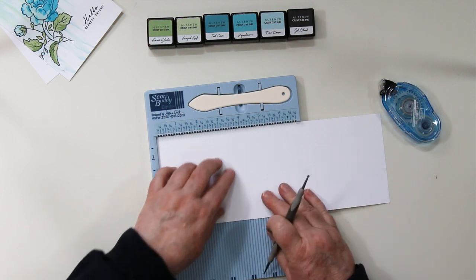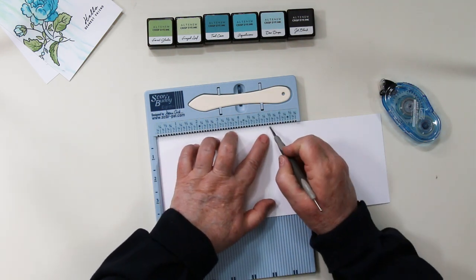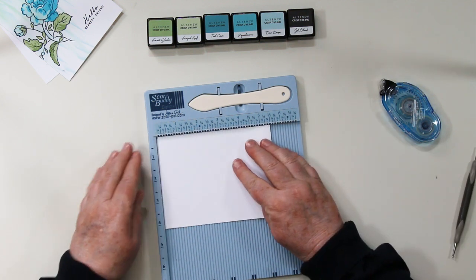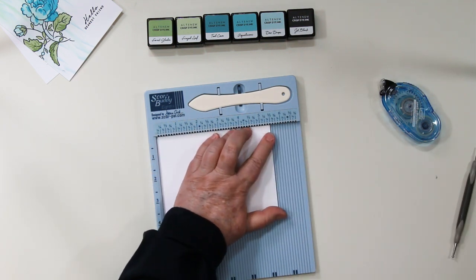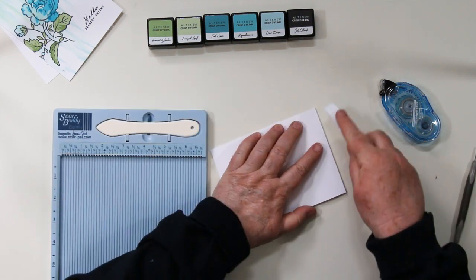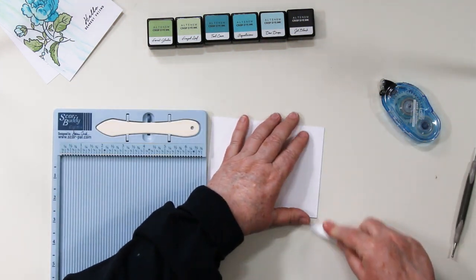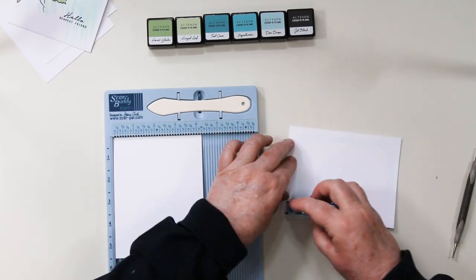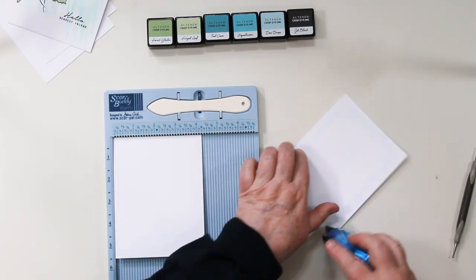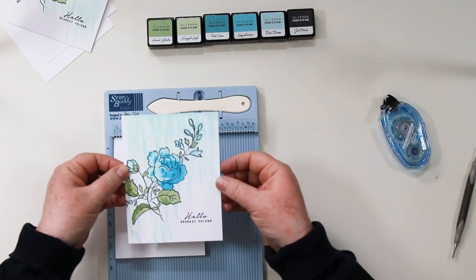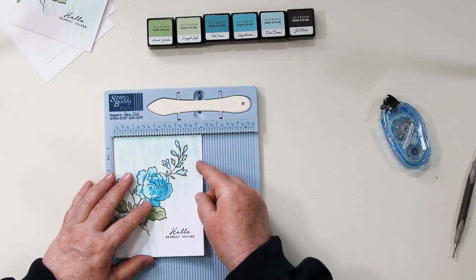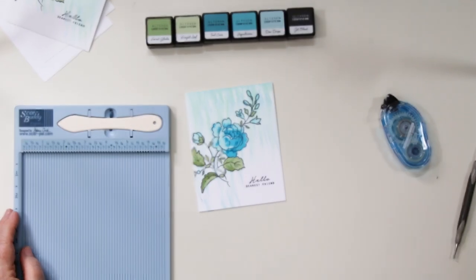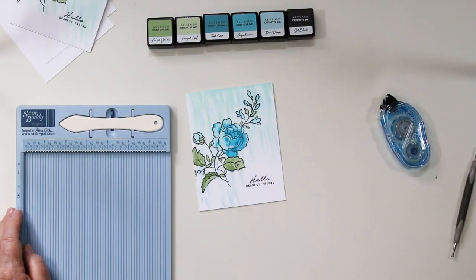I'm using my score buddy to score my card base. This is Hammermill 100 pound, four and a quarter by eleven. I'm scoring and folding it at five and a half and then I'm also going to burnish it with my bone folder just to get a nice smooth crease at the top. Use the corners of the score buddy to line up that card front and lay it down onto the base—it's a nice way to get a perfect join on those two pieces.